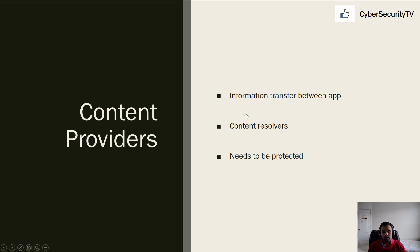Content resolvers are something like contacts — your contact information. Let's say your WhatsApp app requires access to read contact information so it can add contacts to WhatsApp chat. These resolvers are sort of a global thing — any app can request this as long as they are authorized. Whenever you install an app, it will ask for a bunch of permissions, and once you give those permissions, the app is authorized to access that information. When doing a pen test, you need to make sure content providers and content resolvers are properly protected.